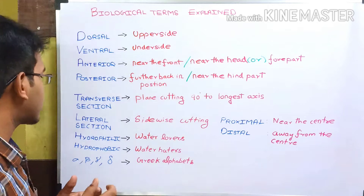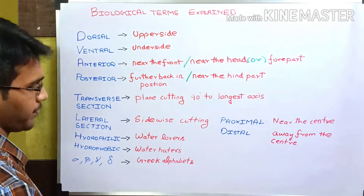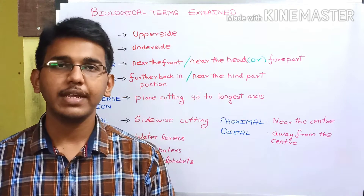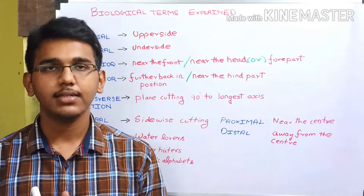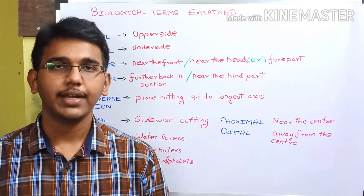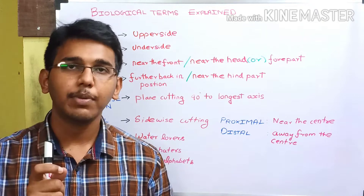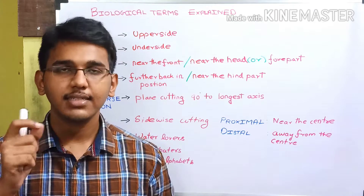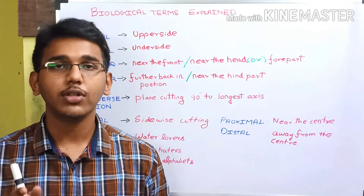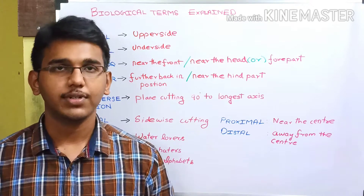Next we have the terms transverse section and lateral section. Section means separating or dividing something. When we use a plane to separate an organism, if that plane makes a 90-degree angle — perpendicular to the longest axis of the organism — it is called a transverse section.